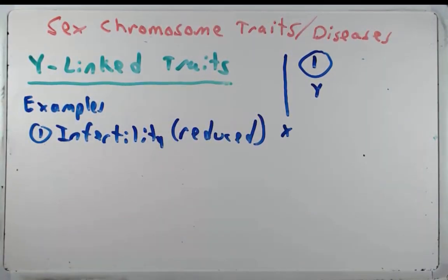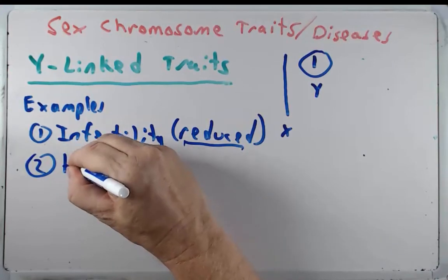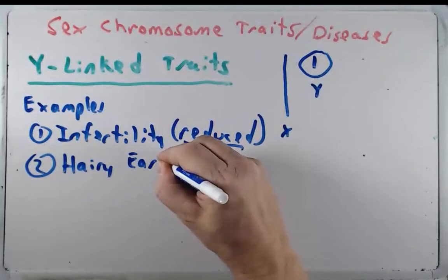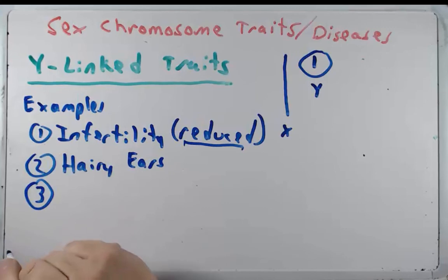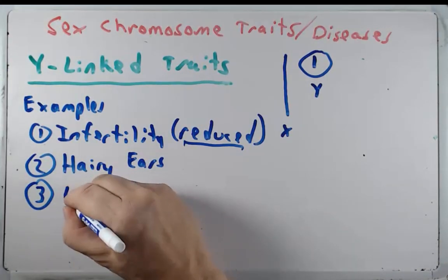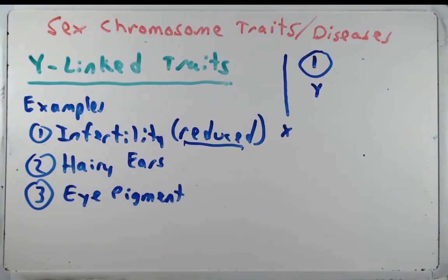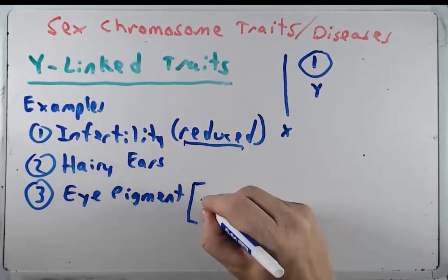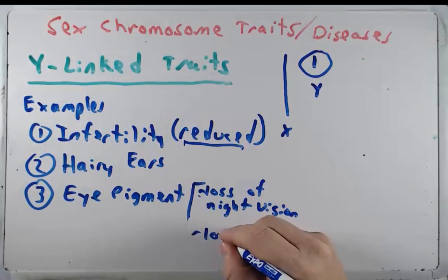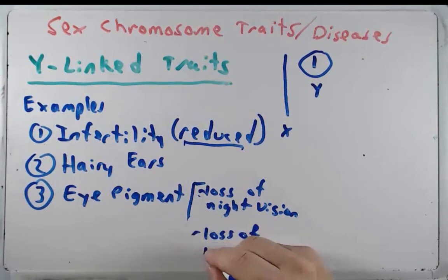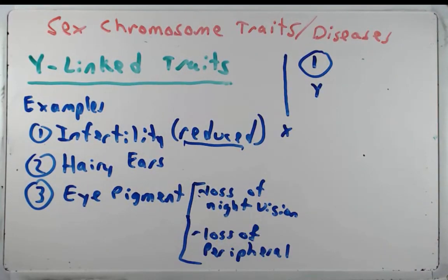The problem with studying infertility as a Y-linked trait is that since they're infertile they can't pass it on, so it's really hard to study — though reduced fertility is a bit easier to study. There is also some evidence for hairy ears as a Y-linked trait in some cases. There's also an eye pigment disease that doesn't lead to blindness but can lead to loss of night vision and peripheral vision.